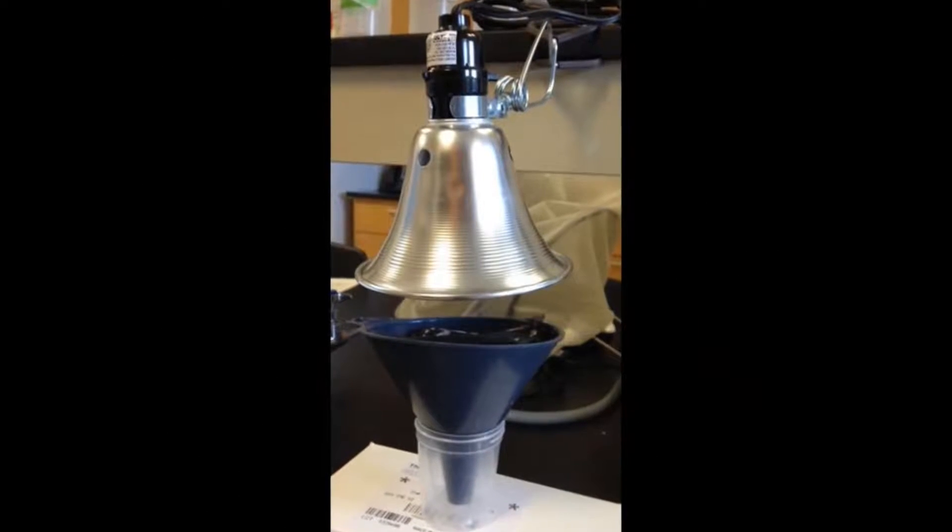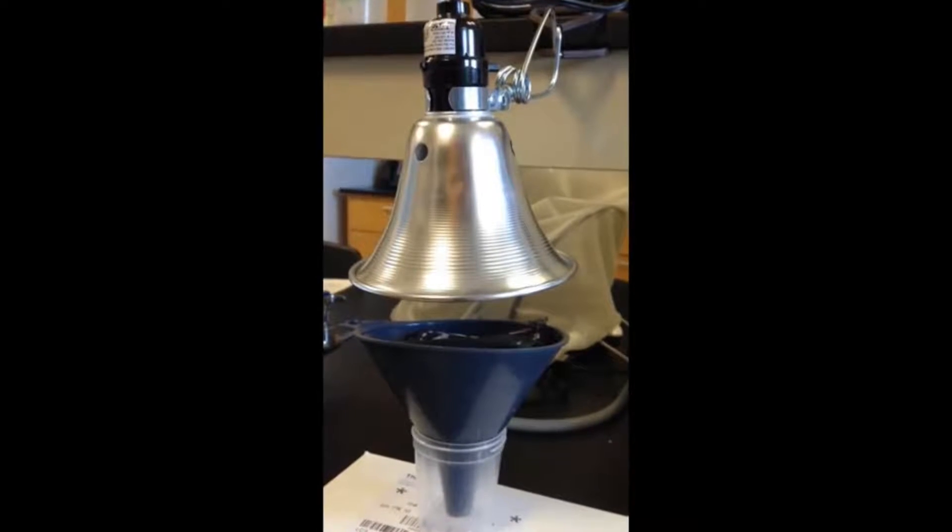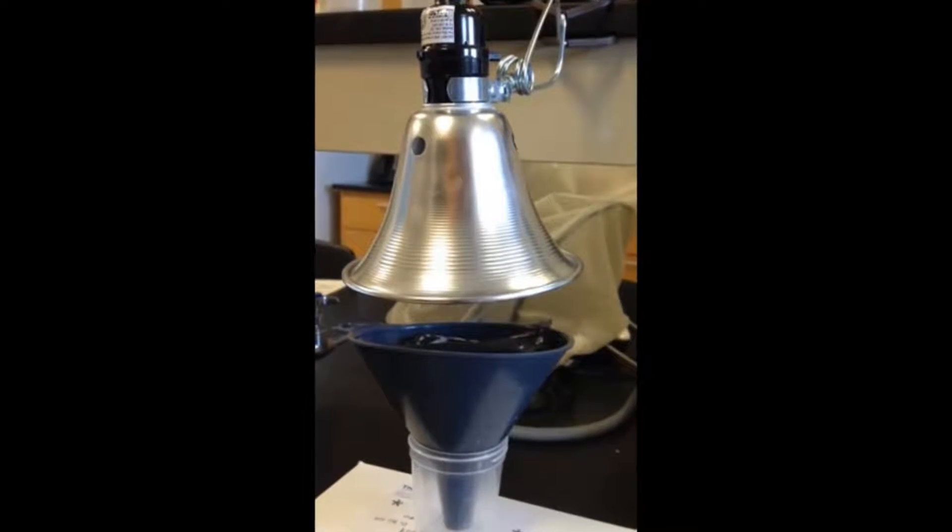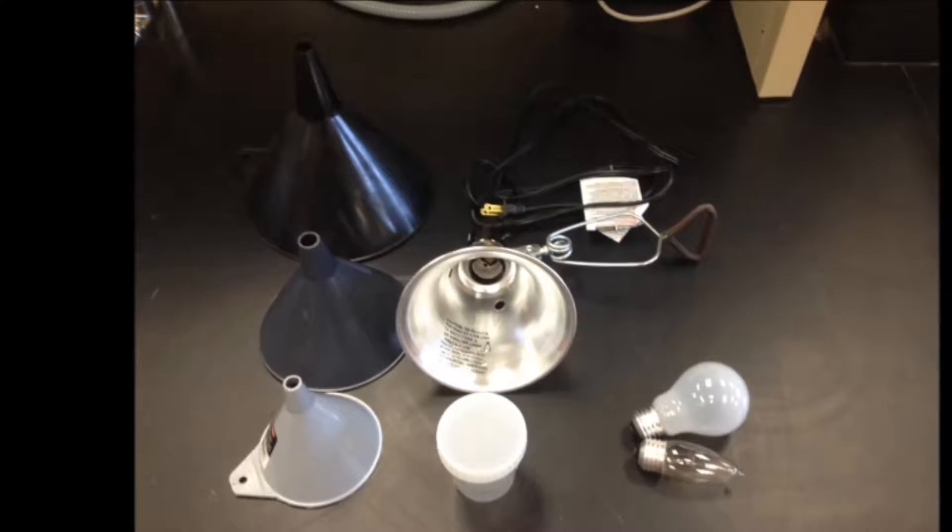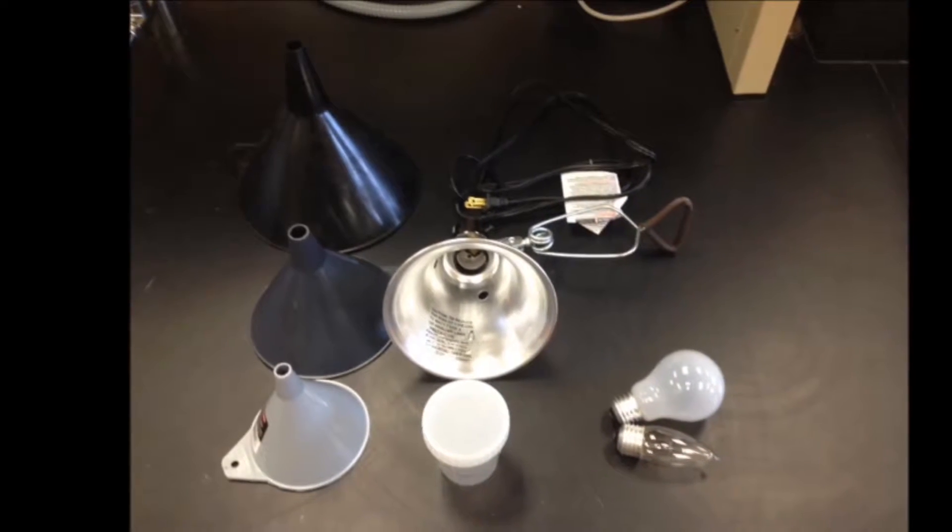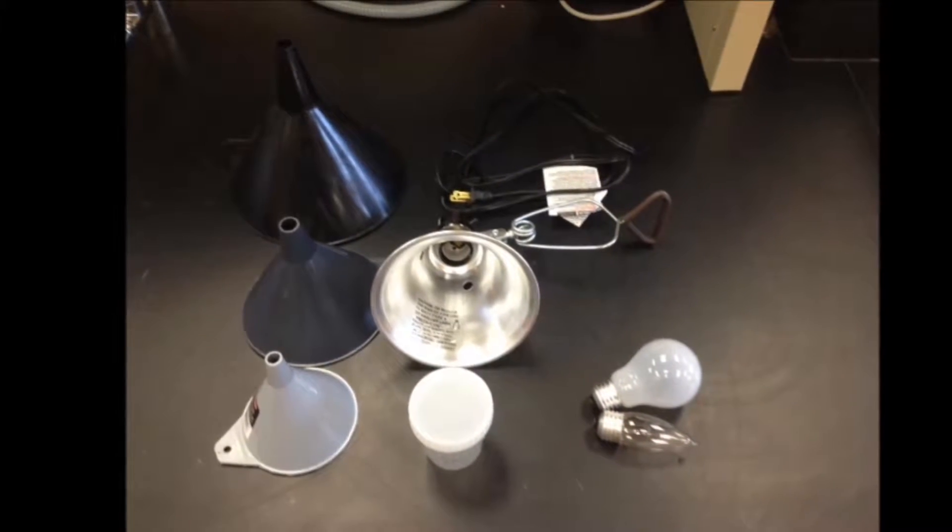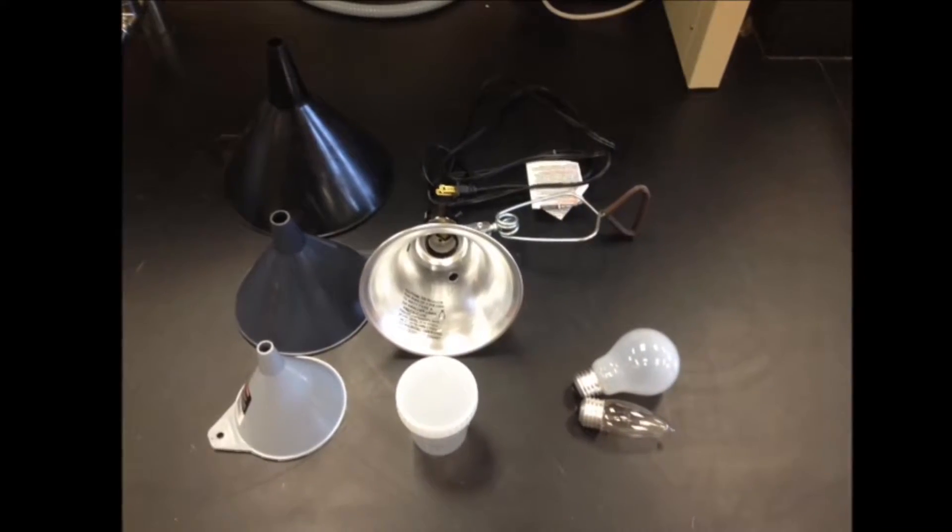The first one we'll set up is the one you see here. It's a bit larger but great for using with a litter bag. You'll need a plastic funnel, of which there are several different sizes, a clamp-on light and either low or higher wattage light bulb, and a plastic cup for collecting your specimen.